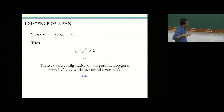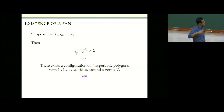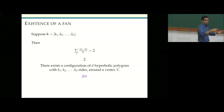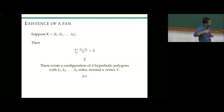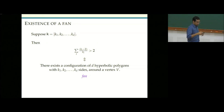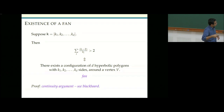A key observation: angle sum greater than 2 is a necessary and sufficient condition for the existence of a fan — a configuration of d regular hyperbolic polygons with k1, k2, ..., kd sides arranged around a vertex. This is the analog of local configurations in the Euclidean setting. The proof is a continuity argument: for small side length L, the angle sum is close to the Euclidean value; for ideal polygons, the angle can be made small; continuity gives some L where the angles fit exactly to 2π.